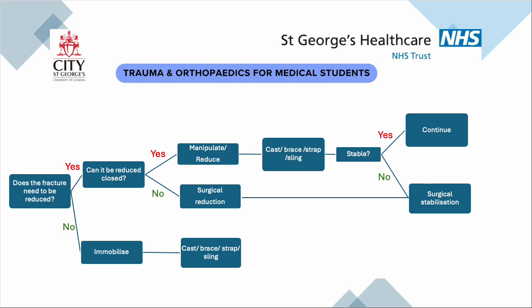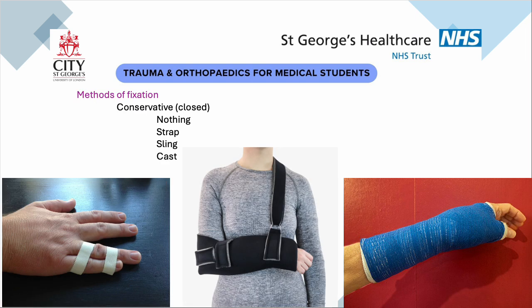Nobody is going to ask you exactly how you're going to treat any one fracture because there are too many variables. Looking at conservative methods of fixation: you could do nothing — if you break your little toe you probably won't bother. You can strap things together, so buddy-strap the toes or fingers together using the good finger to splint the bad one, and leave it until it heals.